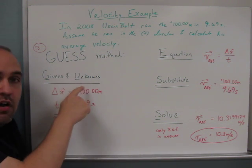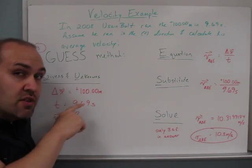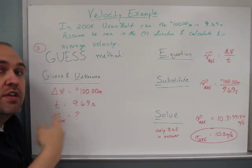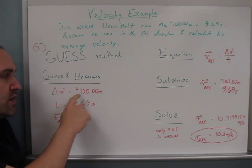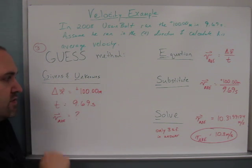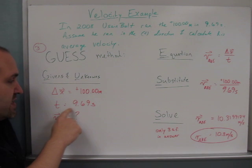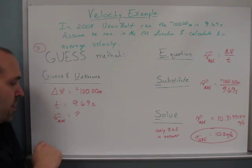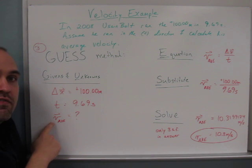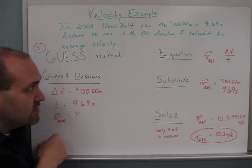Write down your givens and your unknowns. What information are you given in the problem and what information are you looking for? And so I wrote down that we knew the displacement was 100 meters in the positive direction, and we know the time is 9.69 seconds—it's the time it took him to run that 100 meters—and we're looking for this average velocity.